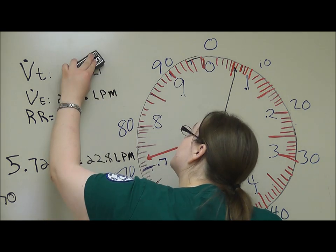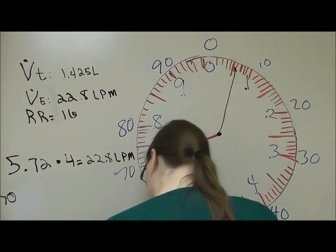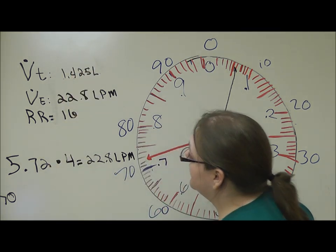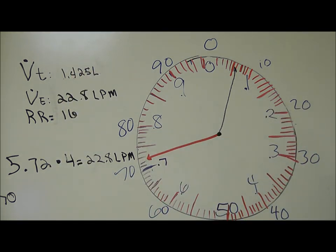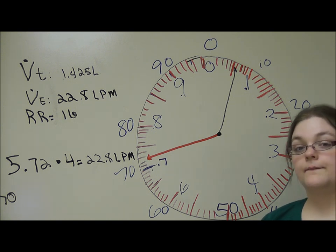So roughly 1.4 liters is my tidal volume. That is interpreting the Wright spirometer and calculating for tidal volume using minute ventilation divided by respiratory rate.